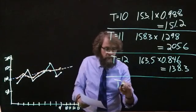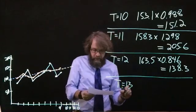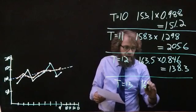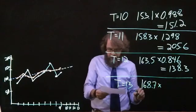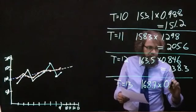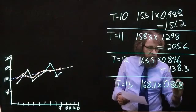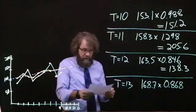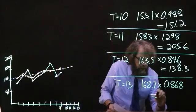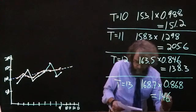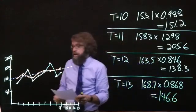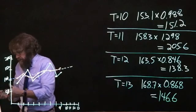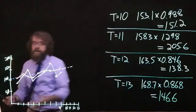Lastly, for period 13, we got a straight line forecast of 168.7, and we multiply by the seasonal index of 0.868, which is the seasonal index for the first quarter of a year, giving us 146.6 as our forecast. Now we have seasonal forecasts for each period.